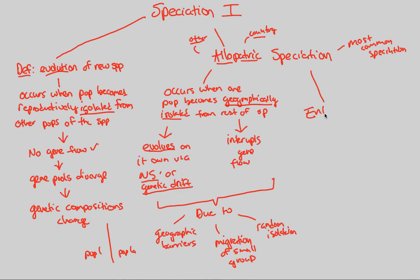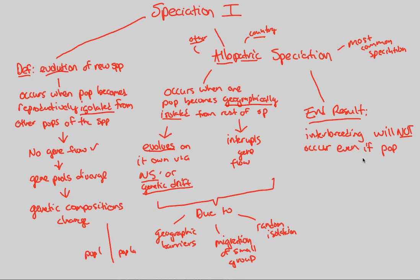Overall, let's remember our end result. Interbreeding — the idea of reproductive success between two different populations — will absolutely not occur, even if the populations are brought back together. For example, if those island 1 and island 2 populations speciate into two different species, and I bring island 2 individuals back onto island 1, island 1 and island 2 individuals will not interbreed.